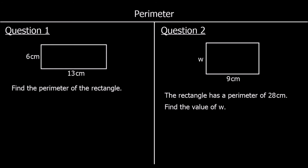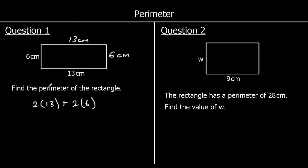Perimeter. The perimeter of a shape is the distance all the way around the edge. Here we've got a rectangle. In a rectangle, the bottom and top are equal, and the two sides are equal. So all the way around we've got two thirteens and two sixes: two thirteens are 26, two sixes are 12, so 26 plus 12 is 38. Perimeter is a distance, so we measure it in centimetres.